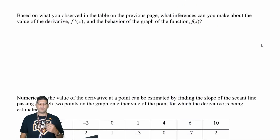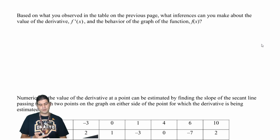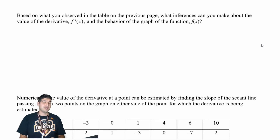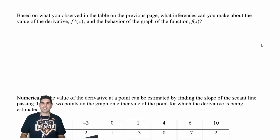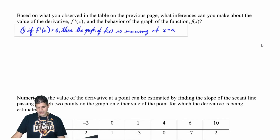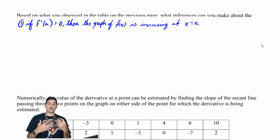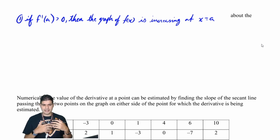Go back and review that table: look at where the function is increasing, where it's decreasing, and what's happening at relative maximums and minimums. The first key thing to notice is that if f prime of a is greater than zero — if the derivative is positive — then the graph of f of x is increasing at x equals a.